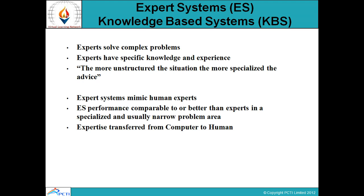Now let us talk about the Expert System, also known as the knowledge-based system. Experts solve complex problems very easily because they have specific knowledge and experience. The more unstructured the problem and situation, the more specialized the advice an expert system offers. Expert systems are capable of mimicking human experts and can provide advice specific to unstructured situations. Expert system performance is comparable to, or better than, that of a human expert in a specialized and narrow problem area. Expertise can be transferred from computer to human.